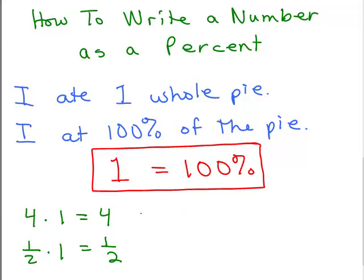So that means instead of writing 4 times 1, I could really write 4 times 100 percent and notice what happens. I have 4 times 100. I have just written the number 4 as a percent. As a percent, the number 4 is written 400 percent.